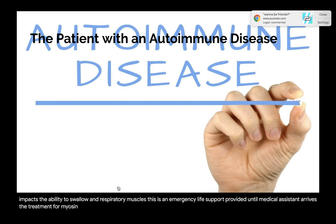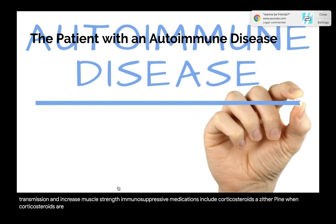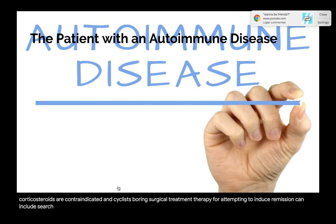Treatment for myasthenia gravis: pharmacological therapy may include anticholinesterase agents to improve neuromuscular transmission and increase muscle strength. Immunosuppressive medications include corticosteroids, azathioprine (when corticosteroids are contraindicated), and cyclosporine. Surgical treatment to induce remission may include removal of the thymus gland, particularly if a tumor develops and drug therapy is ineffective.